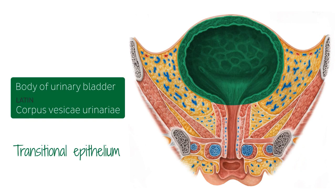The entire volume of the bladder varies, but it can hold between 400 milliliters to 1000 milliliters. The ureters will be opening into the body of the bladder posteriorly, and you see here the orifices where they're going to be connecting with the bladder, which we will discuss later on in this tutorial.